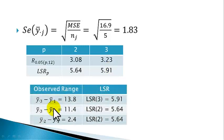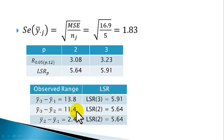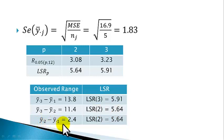We now do the following comparisons. The observed range Y-bar dot 3 minus Y-bar dot 1 is 13.8, compared with LSR for p equals 3, which is 5.91. The range between Y-bar dot 3 and Y-bar dot 2 is 11.4, compared with LSR for p equals 2, which is 5.64. Finally, the range between Y-bar dot 2 and Y-bar dot 1 is 2.4, compared with LSR for p equals 2, which is 5.64.